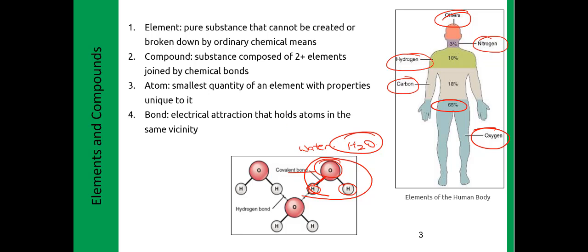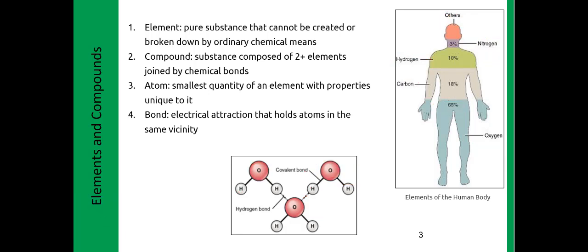An atom is the smallest quantity of an element with properties unique to it — for example, the oxygen atom. Water is made out of one oxygen atom and two hydrogen atoms. There are different types of bonds that we'll cover in the next couple of slides.